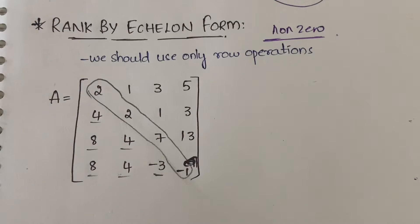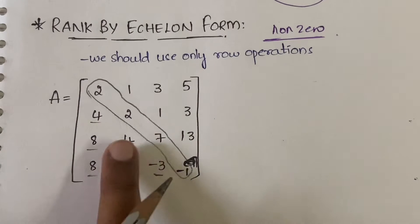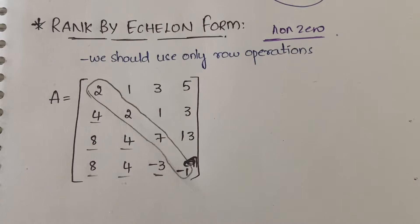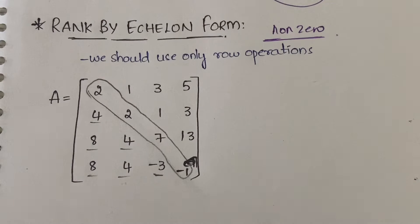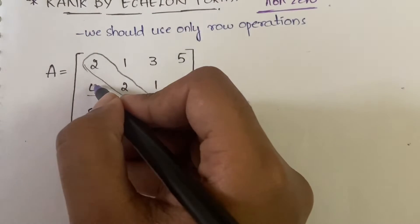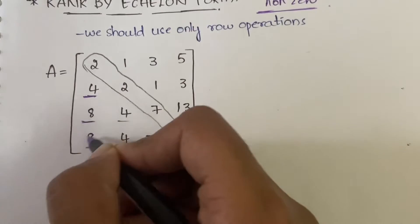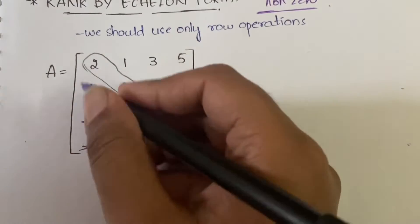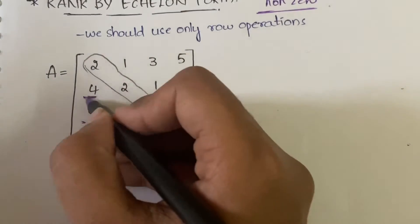You have to do row operations in such a way that all elements below the diagonal become 0. Once these elements become 0, you can stop the process and calculate the number of non-zero rows. Let us concentrate on these three elements below the diagonal in the first column and try to make them 0.